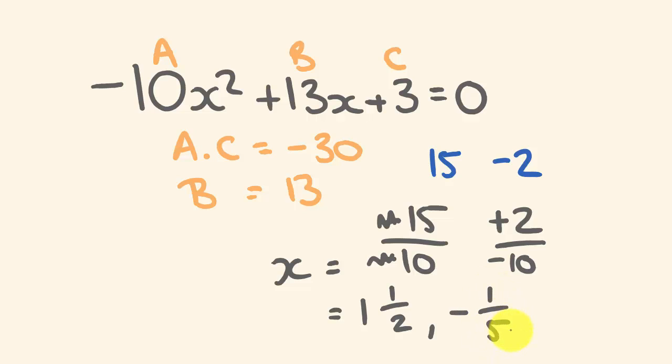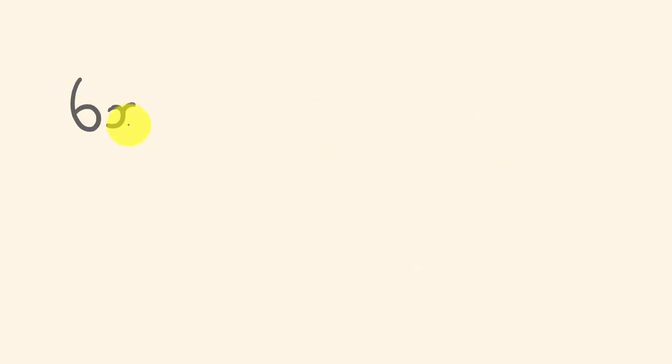How did you go with that? I tell you what, we'll get a doozy for the last one. Here we go. 6x squared, take away x, take away 2, is equal to 0. Solve for x, eh?